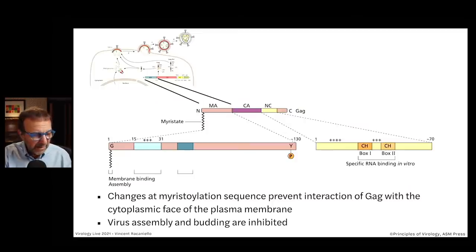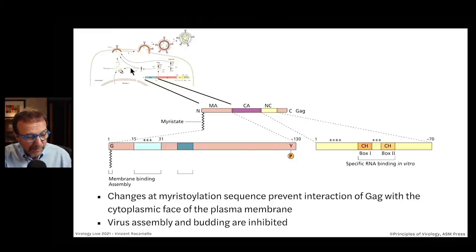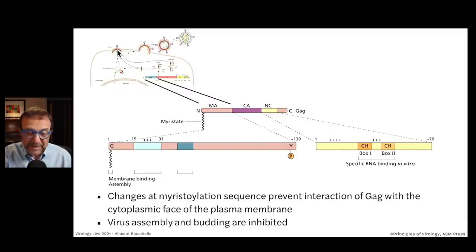So let's look at GAG and see what directs it to the plasma membrane. These GAG proteins go up to the plasma membrane — what mediates that interaction? Here is GAG again, and the matrix is shown at the bottom.